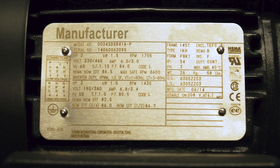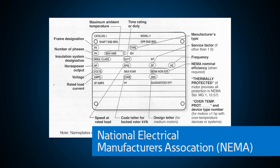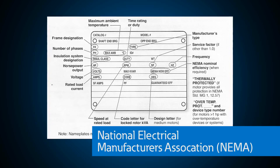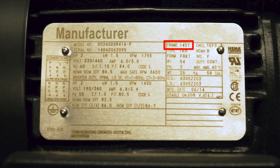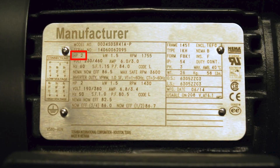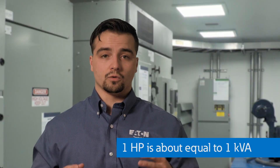Motors have a nameplate to display the necessary electrical and mechanical information for a technician or engineer. Let's take a closer look at the nameplate. This steel or aluminum plate is engraved to make the information readable for the life of the motor. Here in the US, nameplate information standards are set by NEMA, the National Electrical Manufacturers Association, but manufacturers may include other information to help with installation, operation, and maintenance of custom motors. The nameplate will list the frame designation for the mounting dimensions, the manufacturer's type which tells the function of the motor, and the power or horsepower rating. A good rule of thumb is that one horsepower is about equal to one kVA.